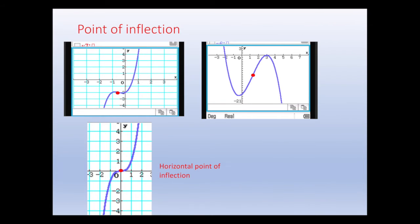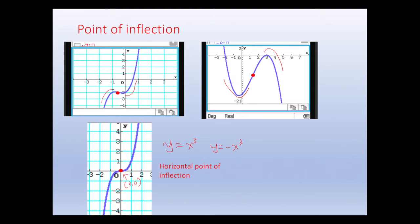The point of inflection is where the cubic changes from concave down to concave up, or from concave up to concave down. For y equals x cubed or y equals minus x cubed, this is called a horizontal point of inflection because the curve is horizontal at that point. In this case, the point of inflection is the origin, (0, 0).